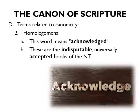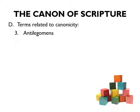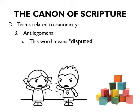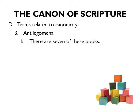The homologoumena includes every New Testament book from Matthew through Philemon, and then 1 Peter and 1 John. That leaves out seven books in our New Testament, which are called the antilegomena. The word antilegomena means 'disputed' — 'ante' means against and 'lageo' is thinking. The church had disputes over these seven books, and those disputes were valid for a time until they really got in and researched them.